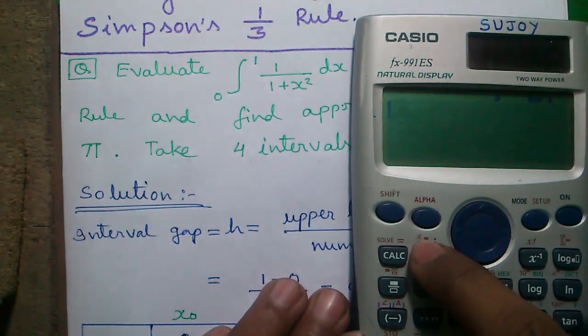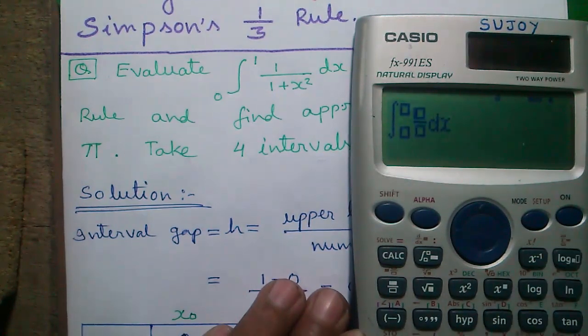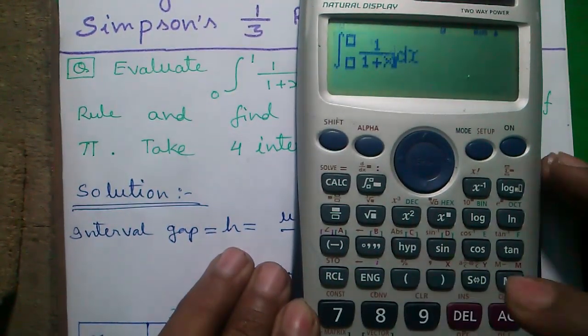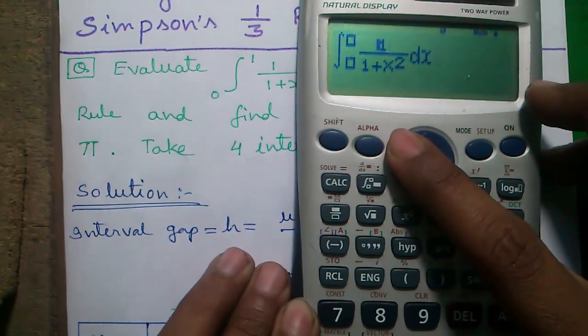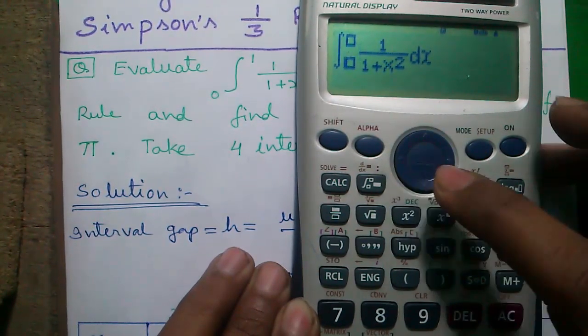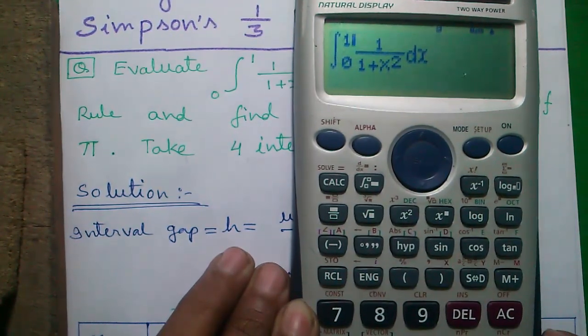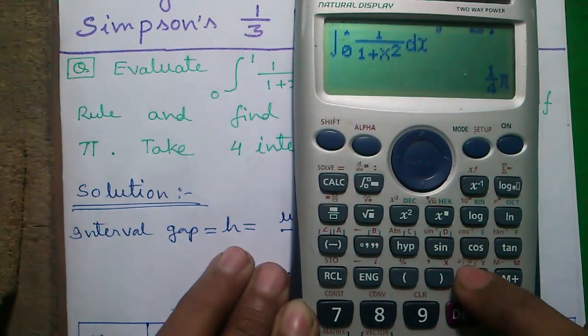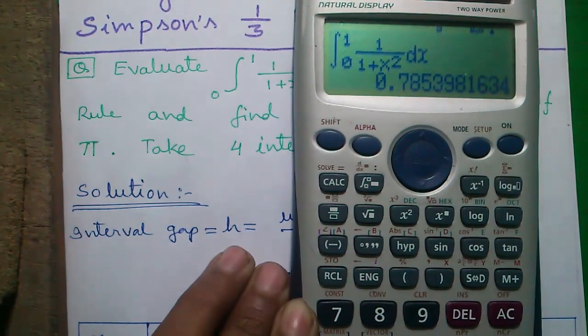For that, press the integration button. Press the fraction button. So 1 divided by 1 plus for x, press alpha and the right parenthesis and square. So 1 divided by 1 plus x square dx, lower limit 0 and upper limit 1. And press the equals to button. So you will get pi by 4. Press s2d button to get the numerical form, equals to 0.7853. Isn't it cool?